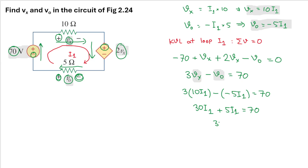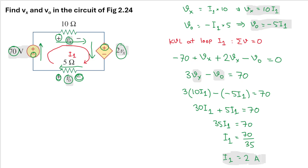So 35·i1 equals 70. Dividing both sides by 35, we get i1 equals 70 divided by 35, which is 2 amperes. This is one of the most important values here.